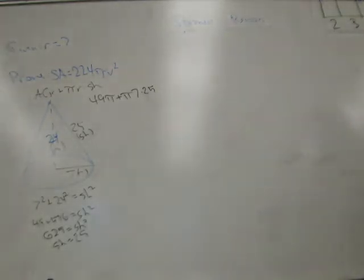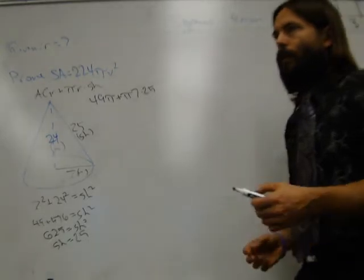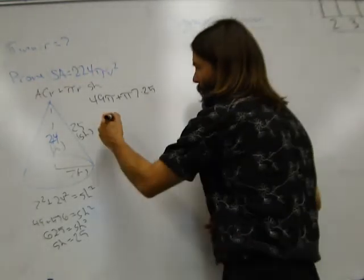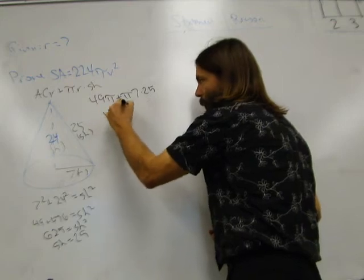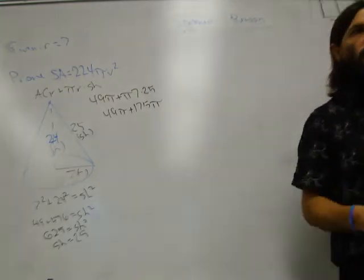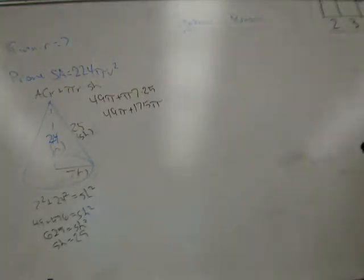So do 7 times 25. Tell me what you get. If you had 7 quarters, how much money would that be? $1.75. And therefore, that's 175. So it's 49 pi plus 175 pi. Combine those two terms. They are like terms. And that will get you your surface area.